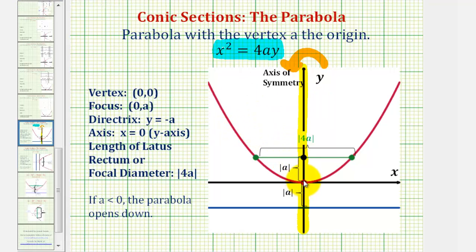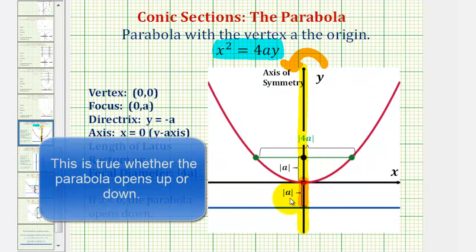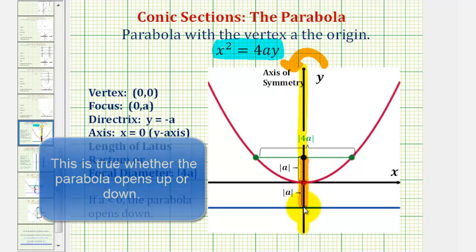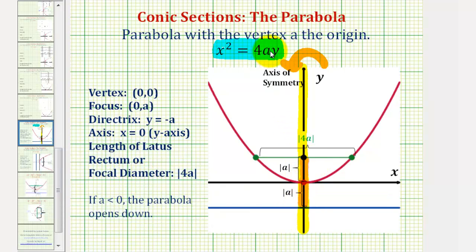The distance from the vertex to the directrix is equal to the absolute value of a, and so is the distance from the vertex to the focus. So determining the value of a from the equation and then the absolute value of a will help us find the equation of the directrix as well as the coordinates of the focus, without having to memorize the formulas.